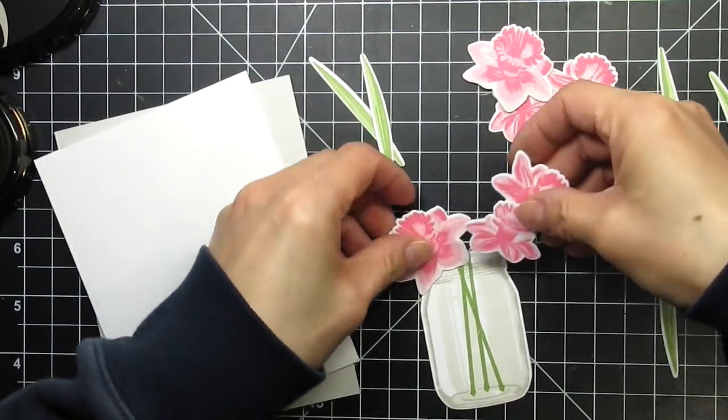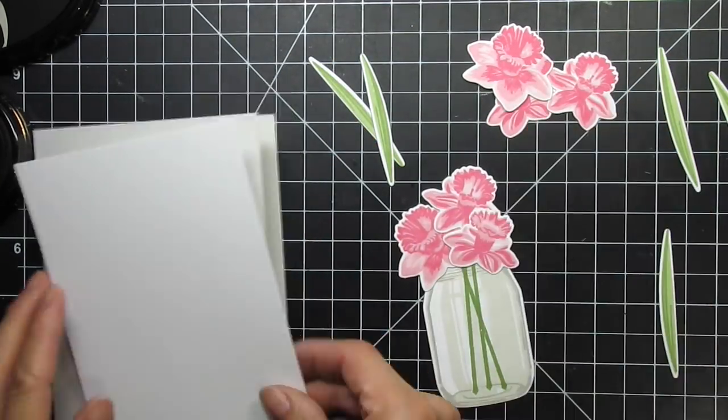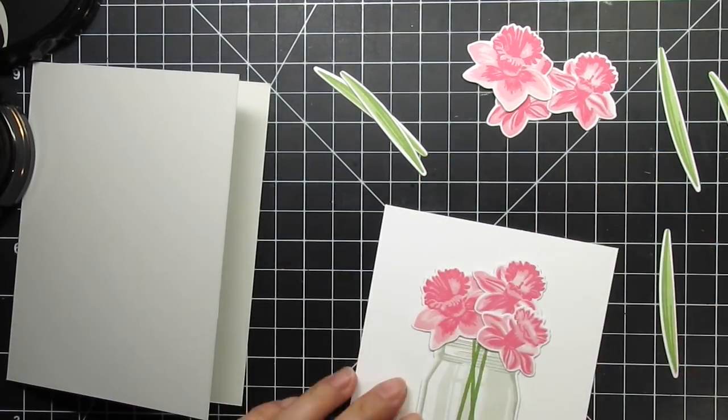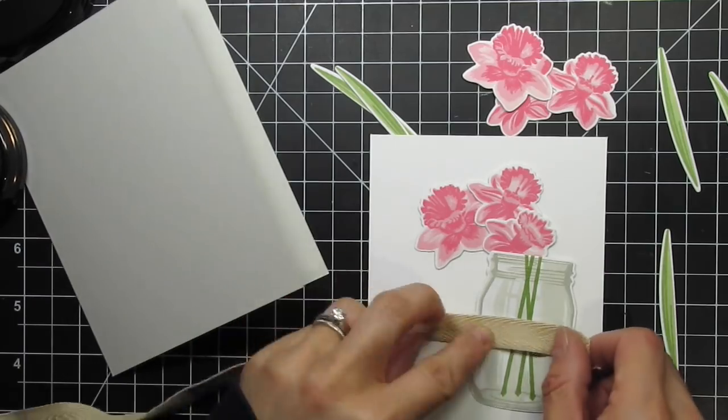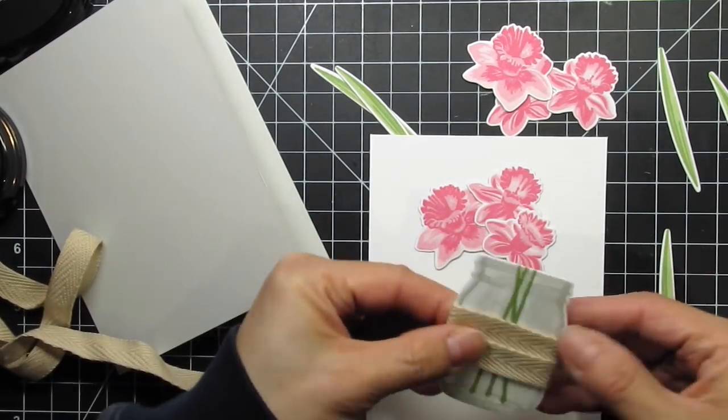I move the jar and flowers to the panel, then try a couple of different canvas ribbons. I wish they were wider because wrapping them around twice just makes the jar look like a mummy. If I used ribbon around the middle, then it might look like a single wide piece, but I decide to try some wired burlap ribbon I have lying around.